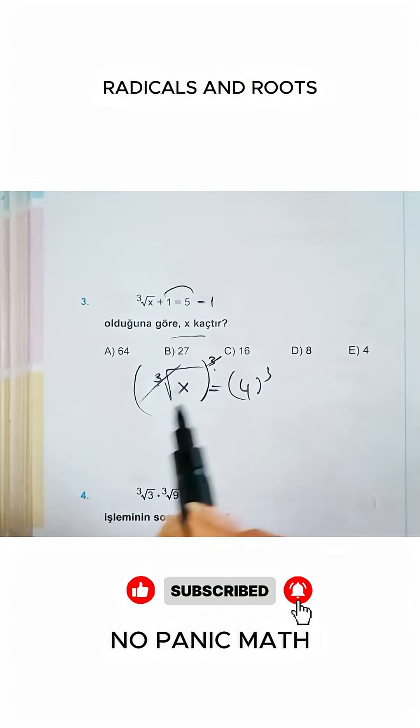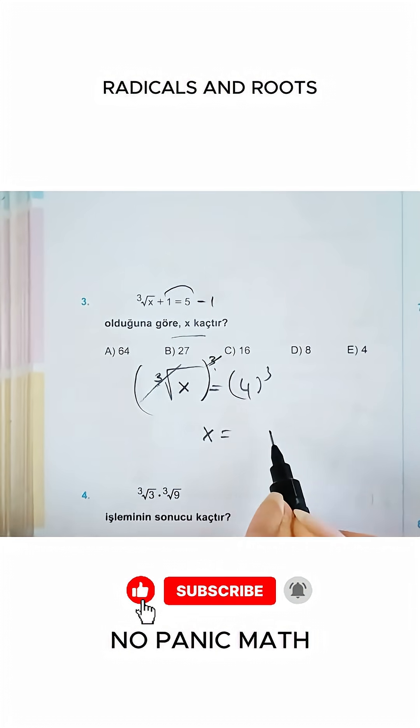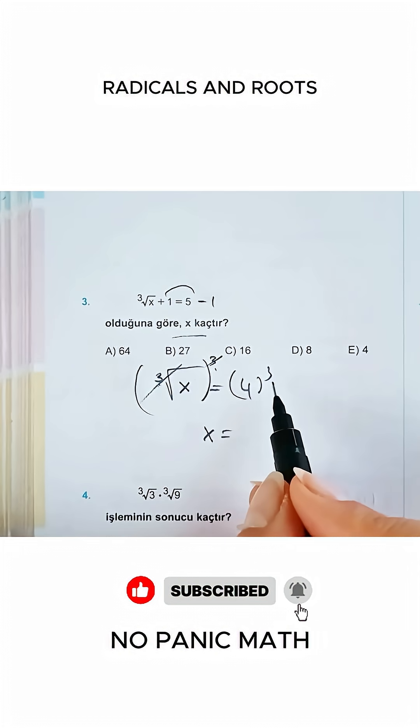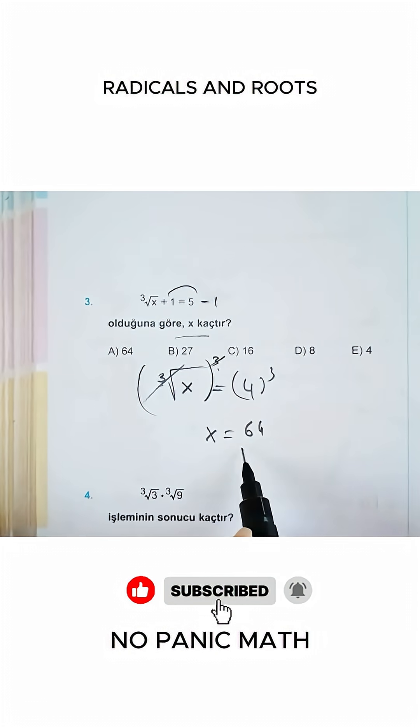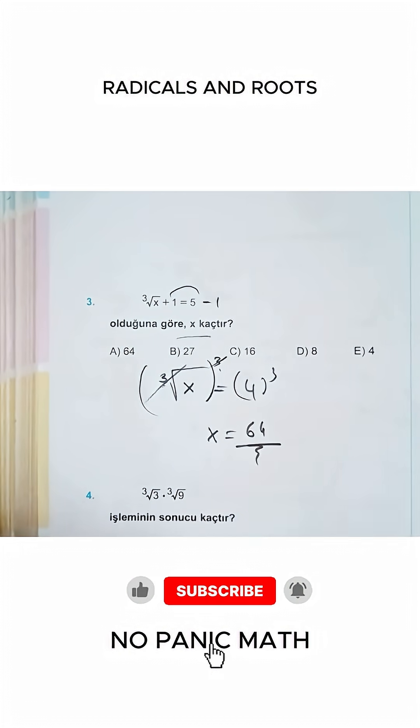So, what happened now? We've eliminated the root from x. Now we have x left. From here, we get 4 cubed. This will also be equal to 64. They asked us for the value of x. Here, x is 64. That's it.